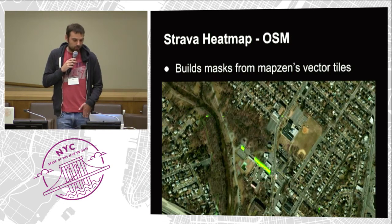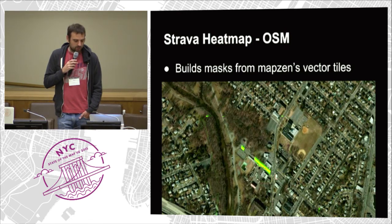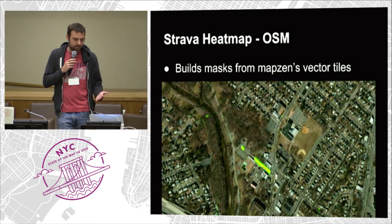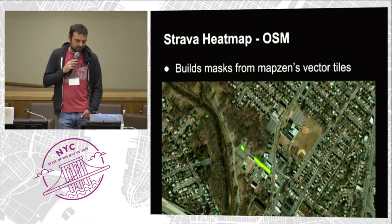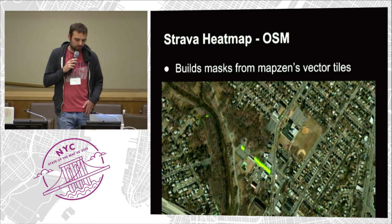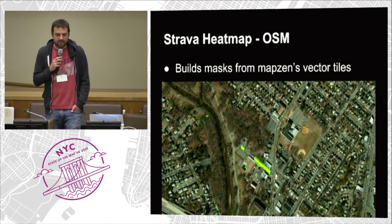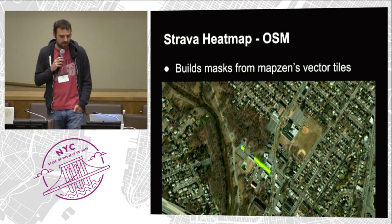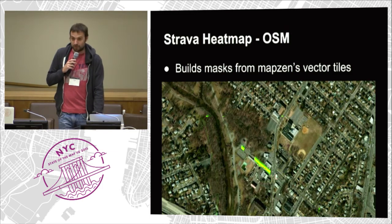Another idea: what if we just take the heat map and mask out everything that's already in OSM? Using Mapbox vector tiles to make that happen, you end up with the heat map showing only places not yet in the data set. It's not really all that useful, but it's a cool way to pan around your neighborhood looking for cut-throughs — they immediately pop out at you. There aren't really that many missing cut-throughs, so you have to look far and wide.